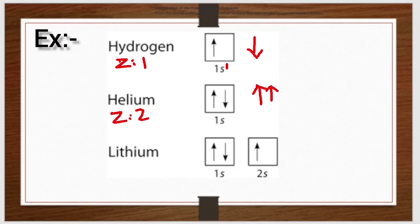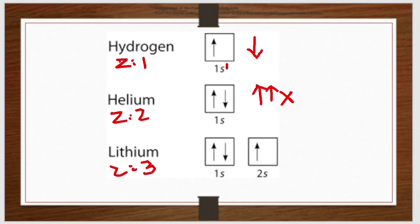The third example is lithium, with atomic number 3. The electronic configuration is 1s2 and 2s1. In 1s2, there are two electrons — spin up and spin down. In the 2s orbital, there is only one electron, because lithium has one electron in the 2s shell.